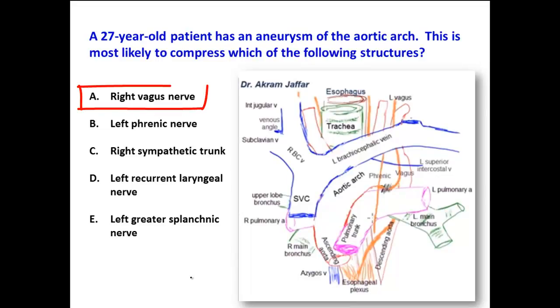Option A: the right vagus nerve. It is clear that the right vagus nerve is on the right side and is not related to the aortic arch, which is on the left side.